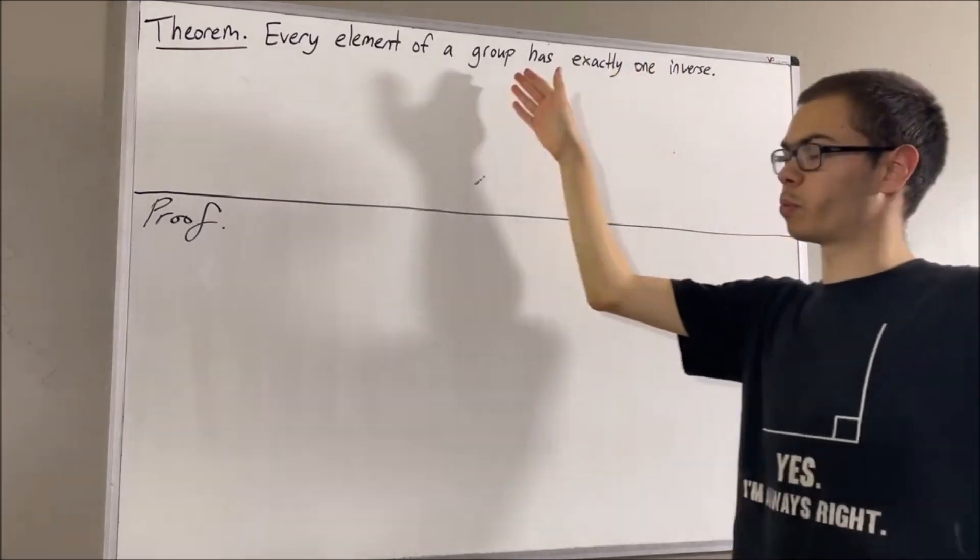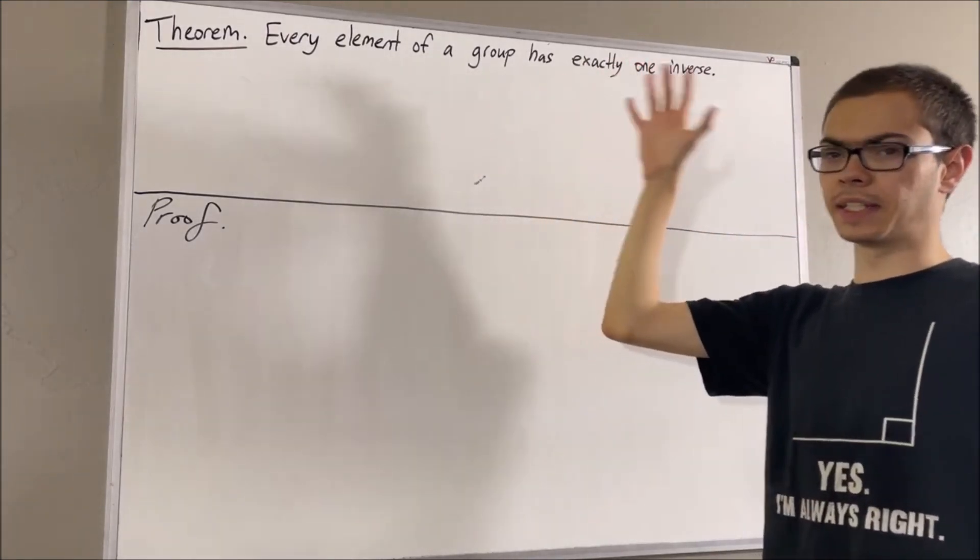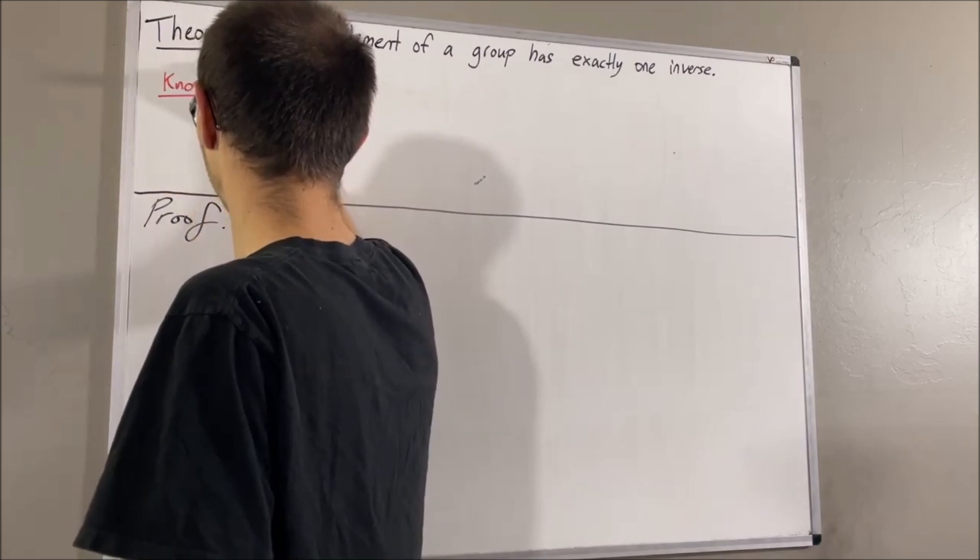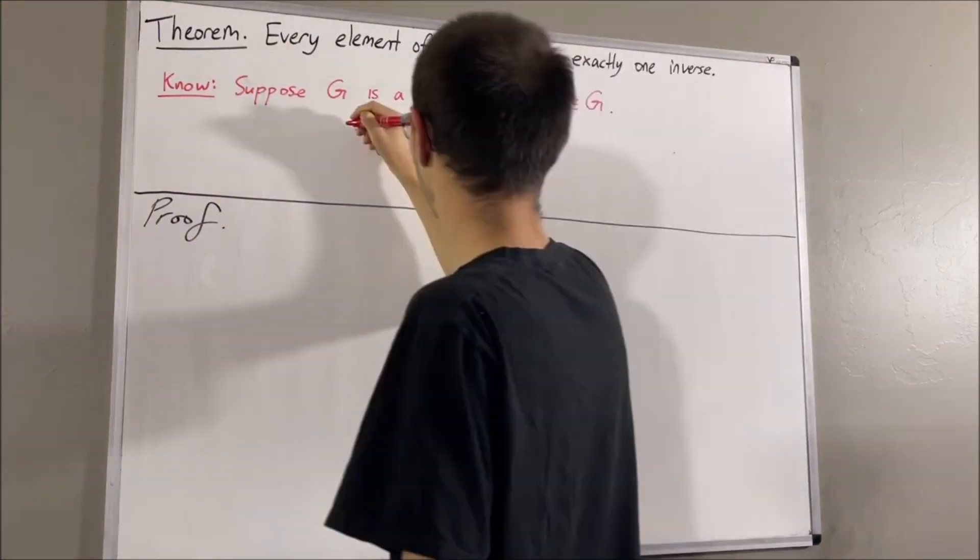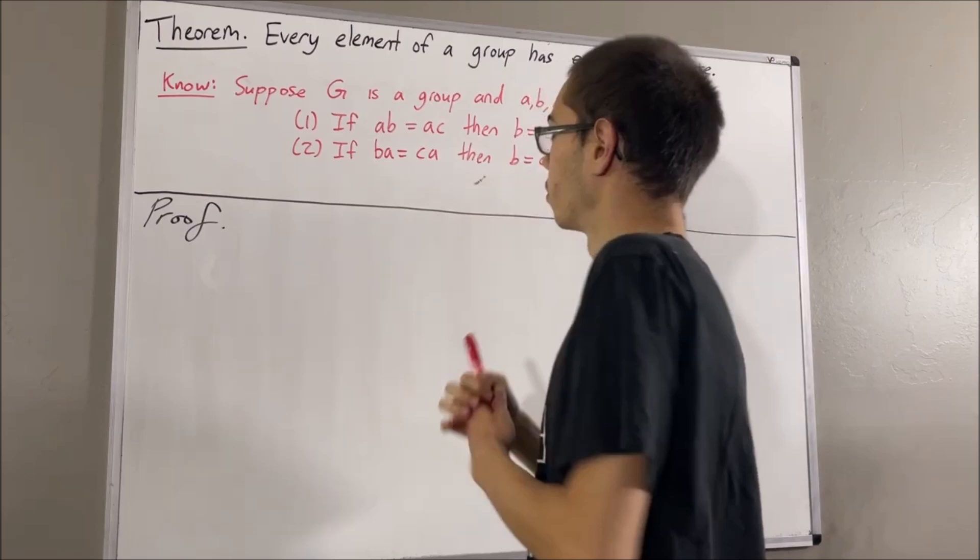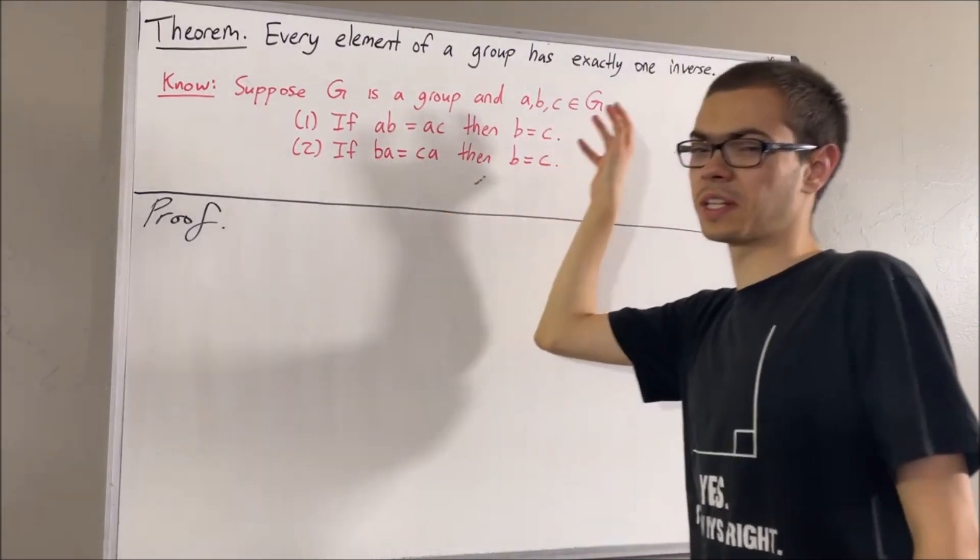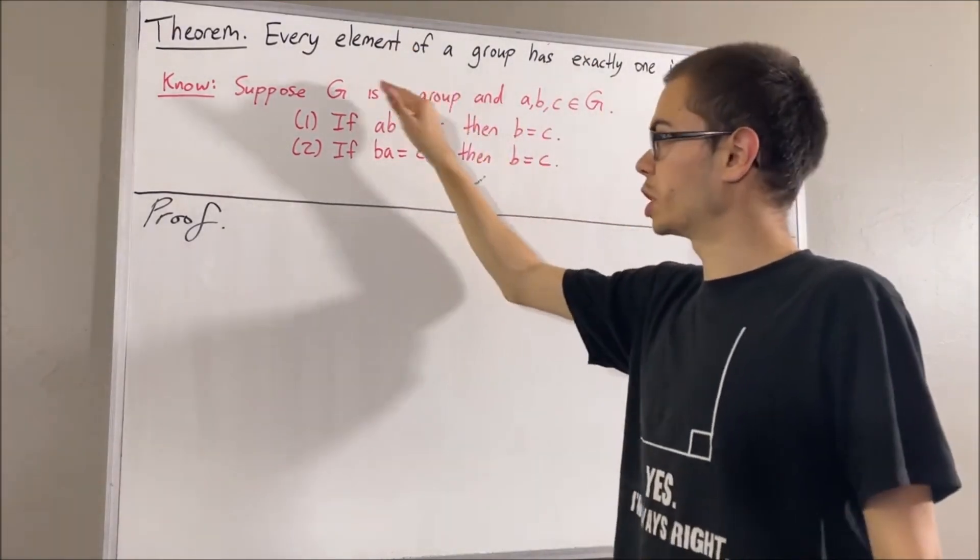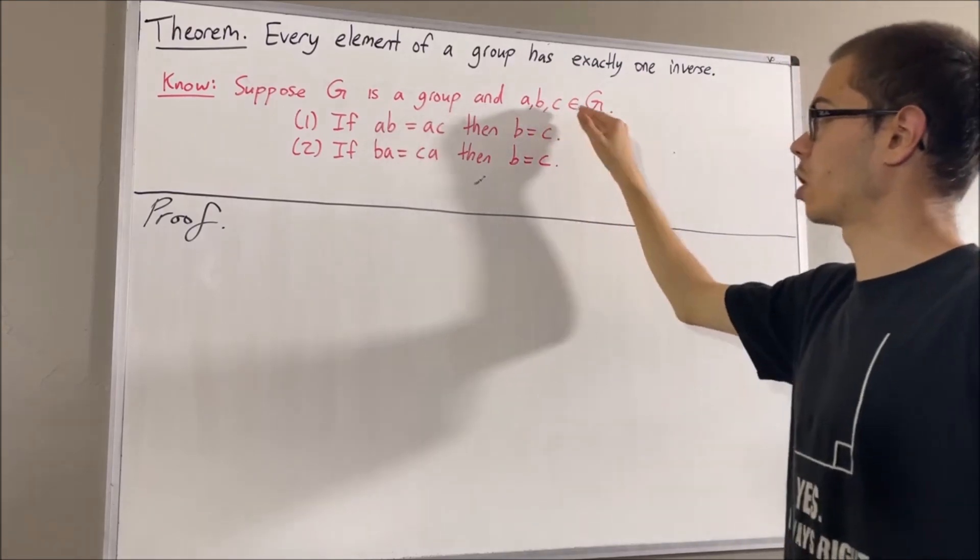Now, a fact regarding groups that we've already proven is the cancellation laws. And this is what the cancellation laws say: Suppose G is a group and a, b, and c are elements of G.